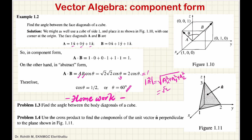Now you have homework. First, find the angle between the body diagonals of the cube. Second, use the cross product to find the components of the unit vector n perpendicular to the plane shown in the figure. Submit both questions as an assignment.